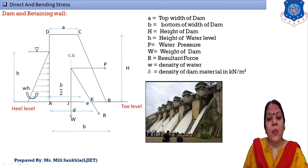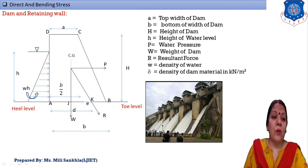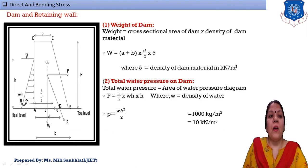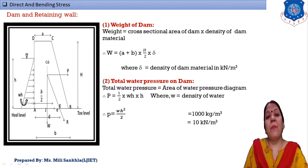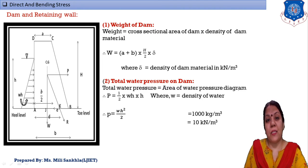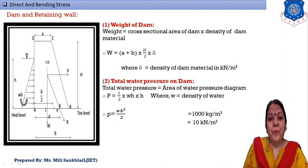We now find out stresses in the pier section of the dam. The back surface where water is stored is known as the heel level, and the front surface is known as the toe level. The difference between a dam and a retaining wall is that a dam retains water (we find water pressure), while a retaining wall retains soil (we find soil pressure).